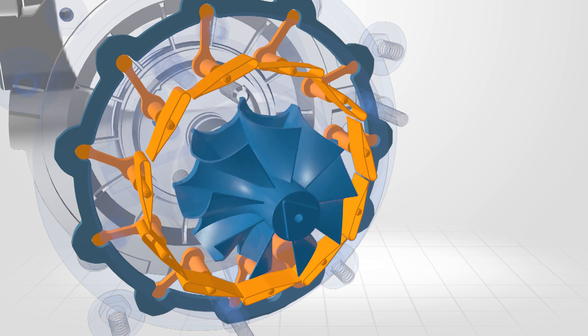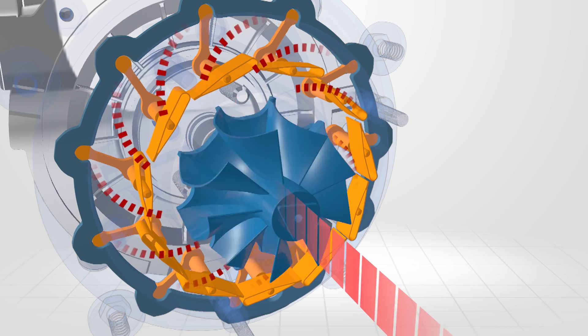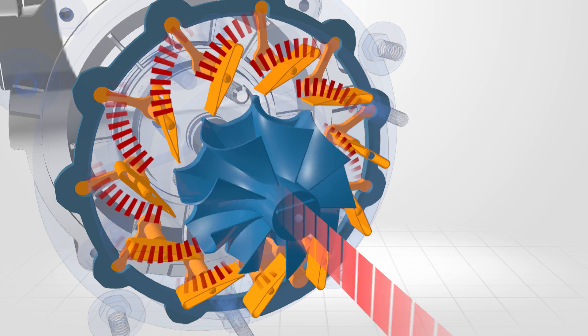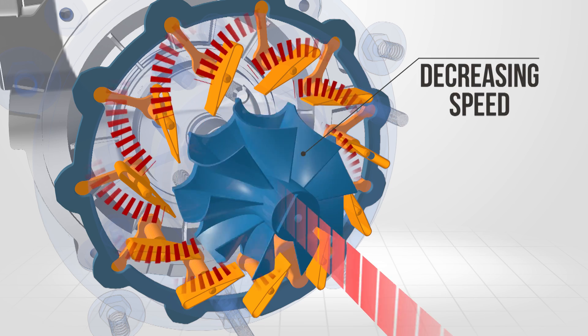To control maximum turbine speed, the vanes are opened, changing the angle at which the exhaust gas contacts the turbine blades. Therefore, the rotational speed of the turbine is reduced.